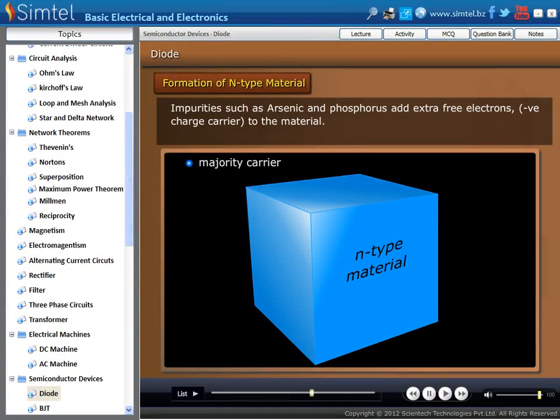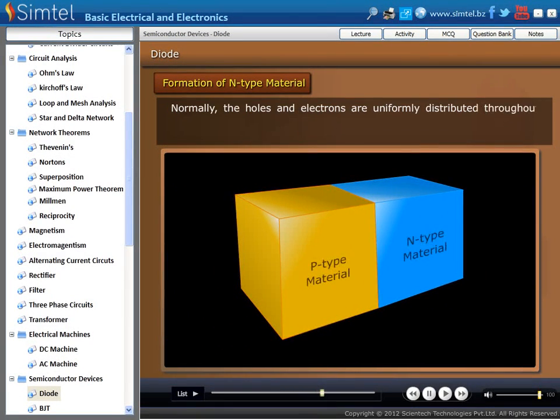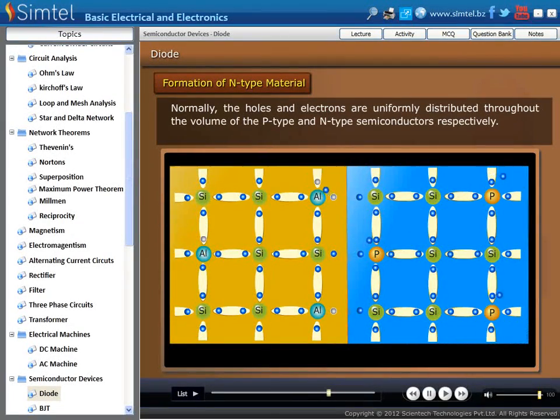In N-type material, electrons are the majority charge carrier. In P-N junction diode, the holes and electrons are uniformly distributed throughout the volume of the P-type and N-type semiconductors respectively.